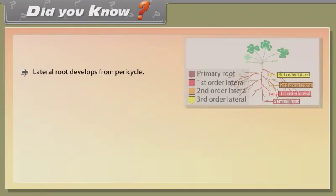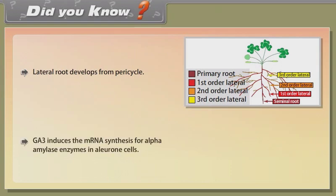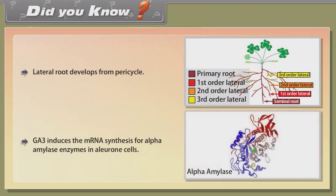Did you know? Lateral root develops from pericycle. GA3 induces the mRNA synthesis for alpha-amylase enzymes in aleurone cells.